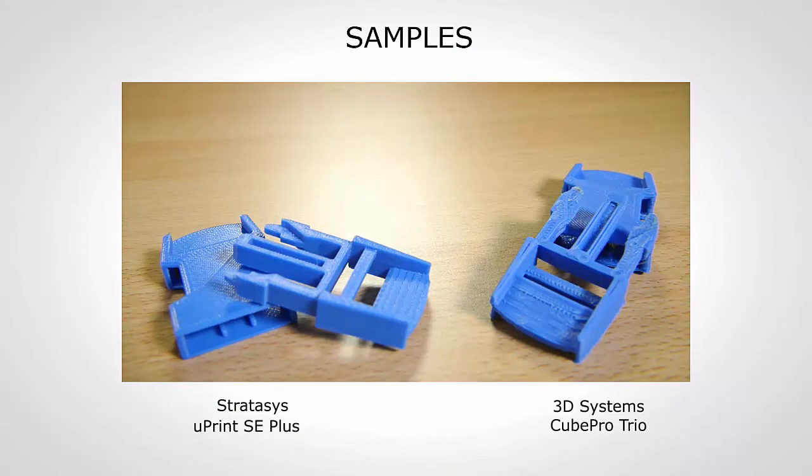Looking at the printed examples of the two belt buckles, we can make some interesting observations about the quality. Firstly, the Uprint SE Plus prints consistently with great quality, with no need for an in-depth understanding of the printing technology itself. A designer can create an object with all creative freedom required, and the printer will print the object as expected.